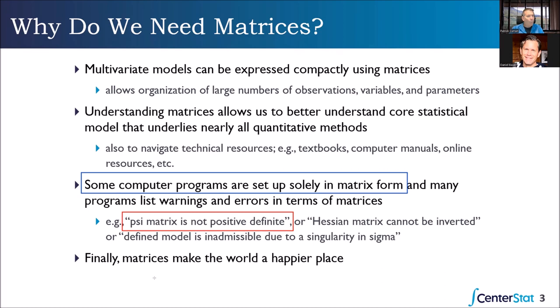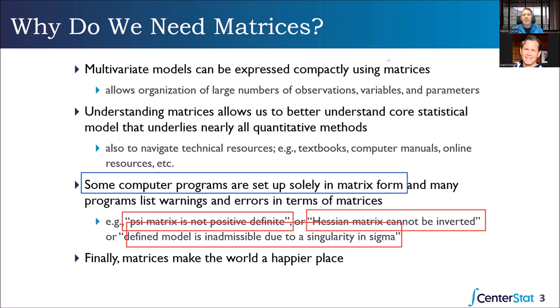What is the Psi matrix? And what does it mean if it's not positive definite? Is that something I should worry about? Some things are just warnings; other things mean 'this is not a maximum likelihood solution and you cannot interpret the parameters.' Another one you'll get if you're a multilevel modeler is 'Hessian matrix cannot be inverted.' And a good mouthful: 'the model is inadmissible due to singularity in sigma.' What do any of these mean? Well, we're going to talk about that.